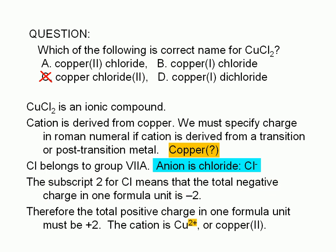The name of this compound is the name of the cation — Copper 2 — followed by the name of the anion — Chloride — as depicted in choice A.